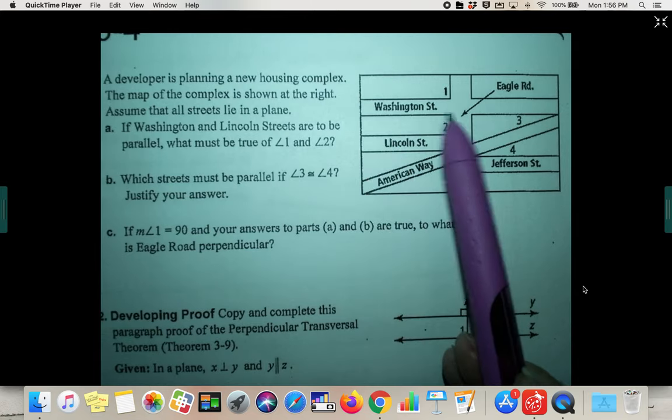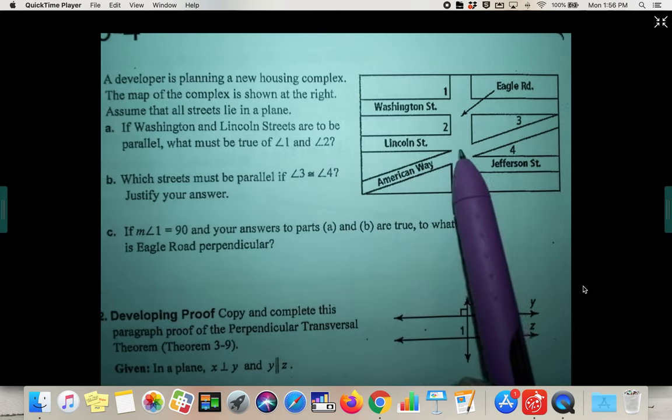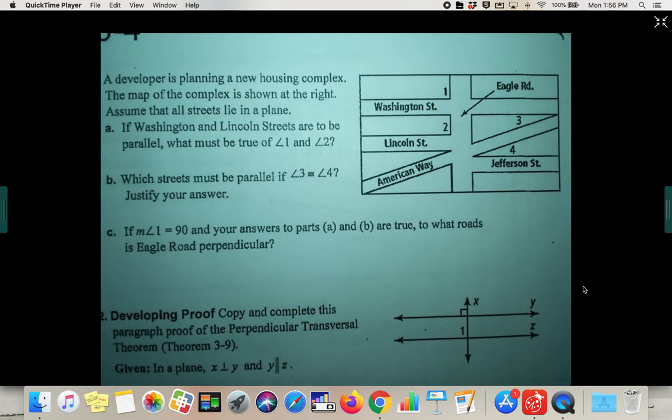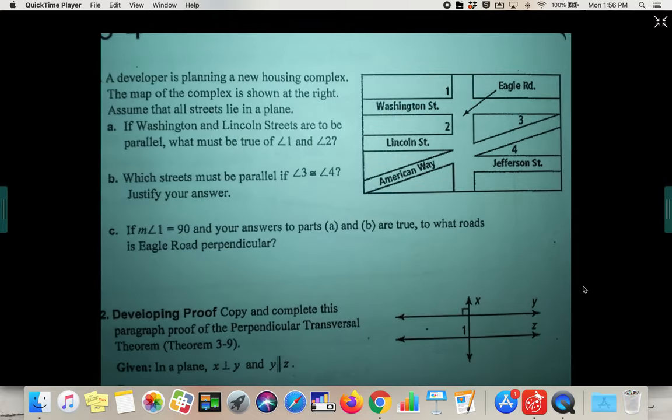So if Washington and Lincoln are to be parallel, what must be true of angle one and angle two? So angle one and angle two, they must be congruent.